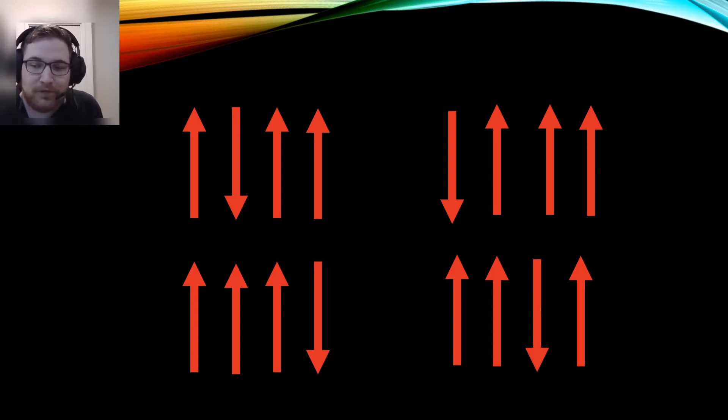So we see the information one has access to when trying to describe properties of a system of many particles is actually extremely sparse compared to the amount of information needed to fully describe what is actually happening for every single particle.